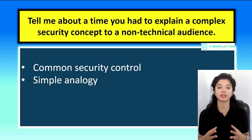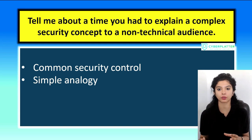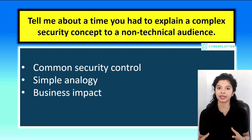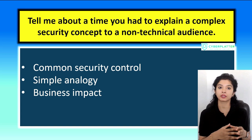Then you can use a simple analogy, like for example house keys, lock doors, seat belts, or alarms to explain this concept. Then at the end, you show the business impact, like for example compliance, how you reduce risk, or how the adoption can be smoother.